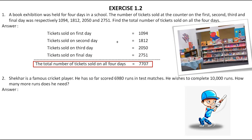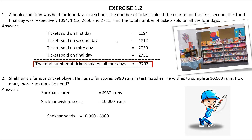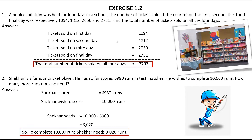So for that we have to subtract. Shekhar scored is 6980 and he wishes to score 10,000. So Shekhar needs equals 10,000 minus 6980, which gives us the answer 3020. So the final answer is: to complete 10,000 runs, Shekhar needs 3020 runs.